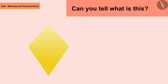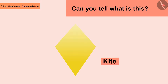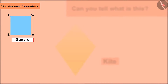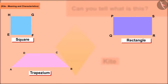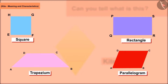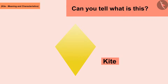This is a kite. All of you must have flown kites. Kite is an important part of geometry — like square, rectangle, trapezium, and parallelogram, kite is also a special type of quadrilateral. It has four vertices, four sides, four angles, as well as two diagonals.